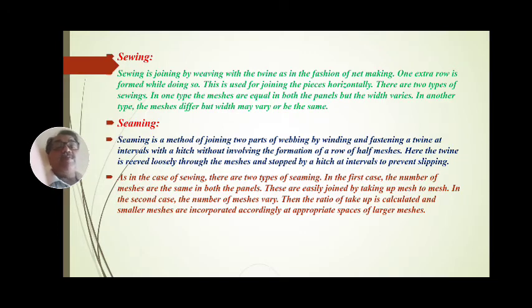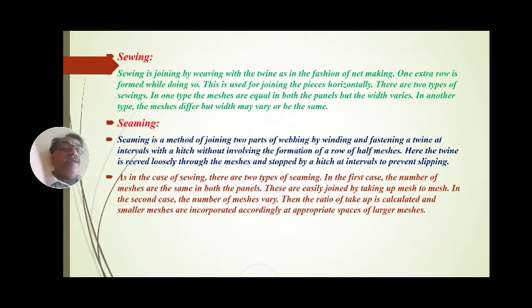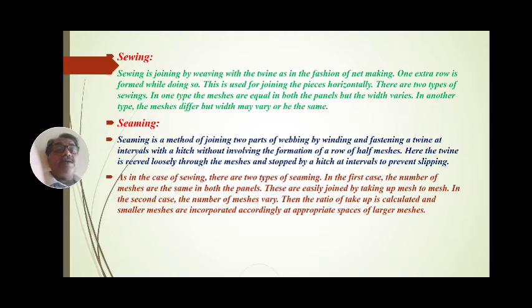This type of sieving is done for the second type of net webbing joining method — that is sieving. As in the case of sieving, in the first type the number of meshes are the same in both panels and are easily joined mesh to mesh. In the second type, the number of meshes vary, the ratio is calculated, and smaller meshes are incorporated according to the appropriate spaces of the larger mesh.